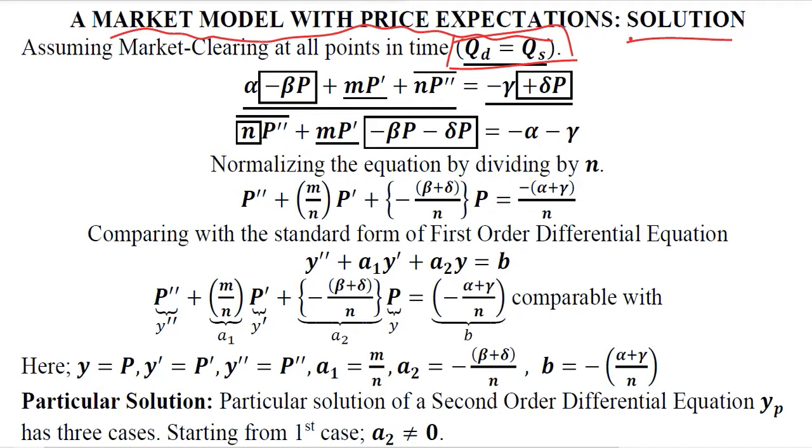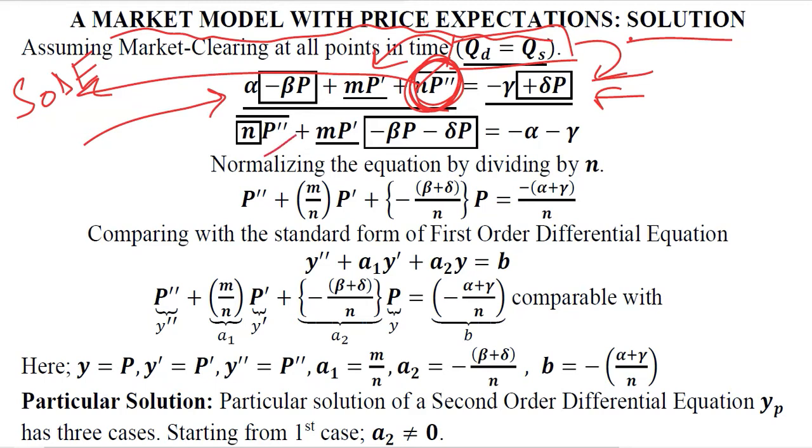Therefore, we can use those demand-supply equations. The demand equation has been substituted on the left-hand side and the supply equation without price expectations on the right-hand side, because we assumed that the supplier doesn't have any price expectations for the sake of ease. Since we can see this second-order derivative right from the beginning, it hints us to think about second-order differential equation development. We have rearranged these terms where the second-order derivative comes first, then the first-order derivative, then the price terms, and the constants are put on the right-hand side.